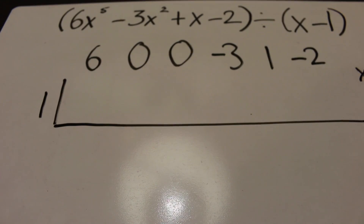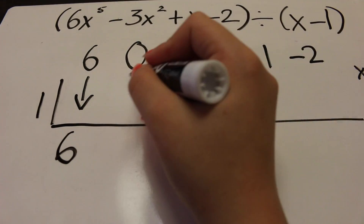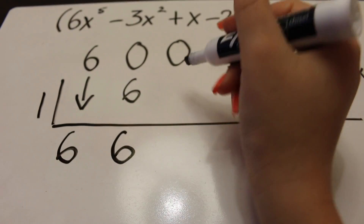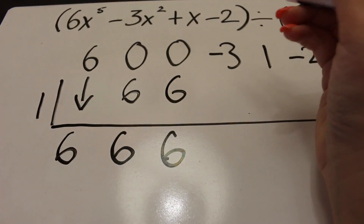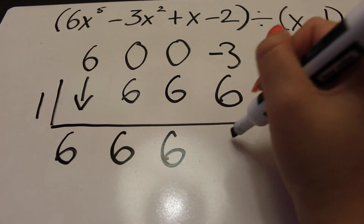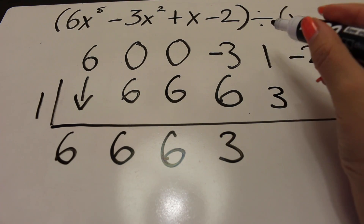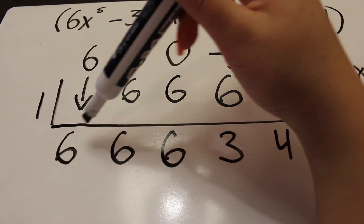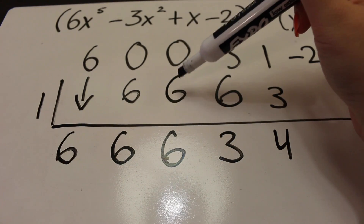Bring the first number 6 down. Multiply 1 and 6 to get 6; add to the next coefficient: 6 plus 0 is 6. Multiply 1 and 6 again to get 6; add: 6 plus 0 is 6. Multiply 1 and 6 to get 6; add negative 3 plus 6 to get 3. Multiply 1 times 3 to get 3; add 1 plus 3 to get 4. Essentially, multiply 1 with each number and add it to the next coefficient.